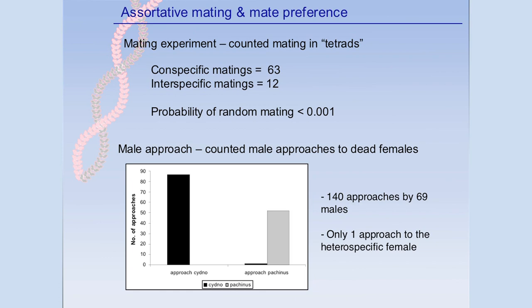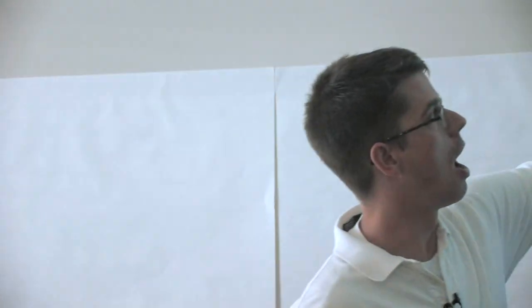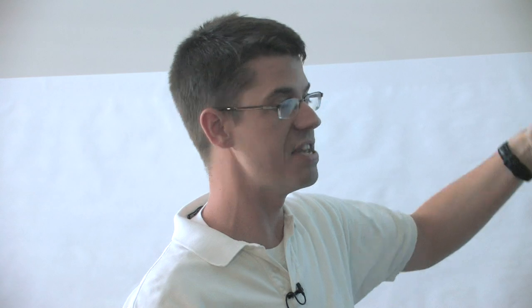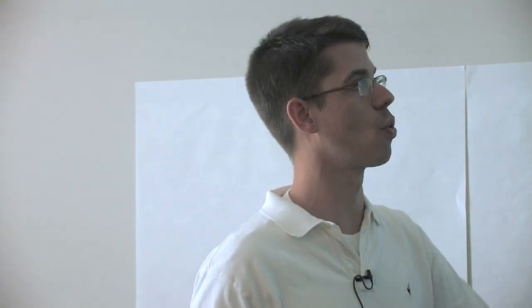So if we look at the young species Cydno and Pachinus, the yellow and white ones, I did a simple mating experiment. I did tetrads: I took a male and female of the yellow species and a male and female of the white species, put them together in a cage, and watched until a couple started mating, then recorded whether it was a mating between species or within species. I did this experiment 75 times. Out of 75, 12 times they mated between species and 63 times within species. So clearly they're not highly averse to interbreeding, but there is significant assortative mating.